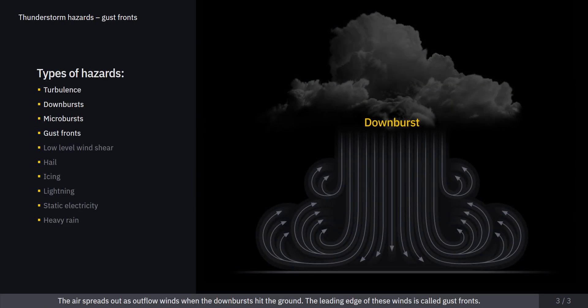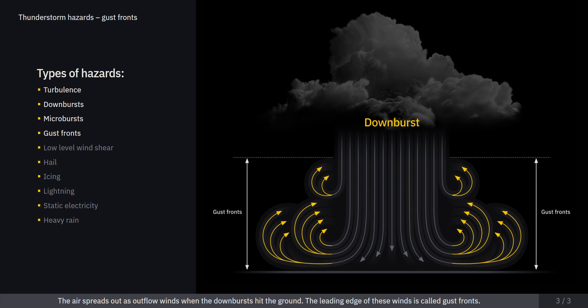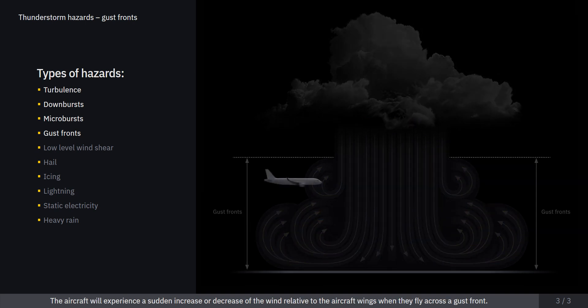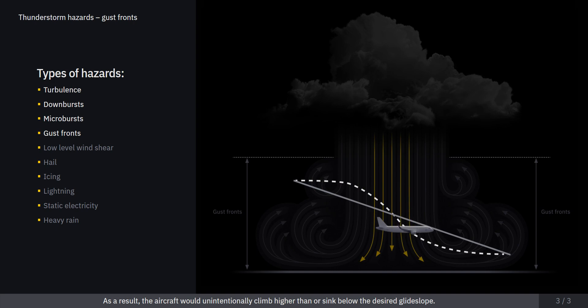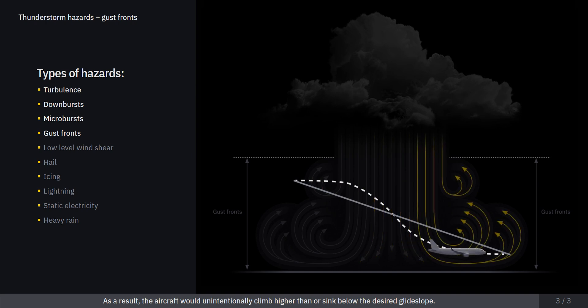The air spreads out as outflow winds when the downbursts hit the ground. The leading edge of these winds is cold gust fronts. The aircraft will experience a sudden increase or decrease of the wind relative to the aircraft wings when they fly across a gust front. As a result, the aircraft would unintentionally climb higher than or sink below the desired glide slope.